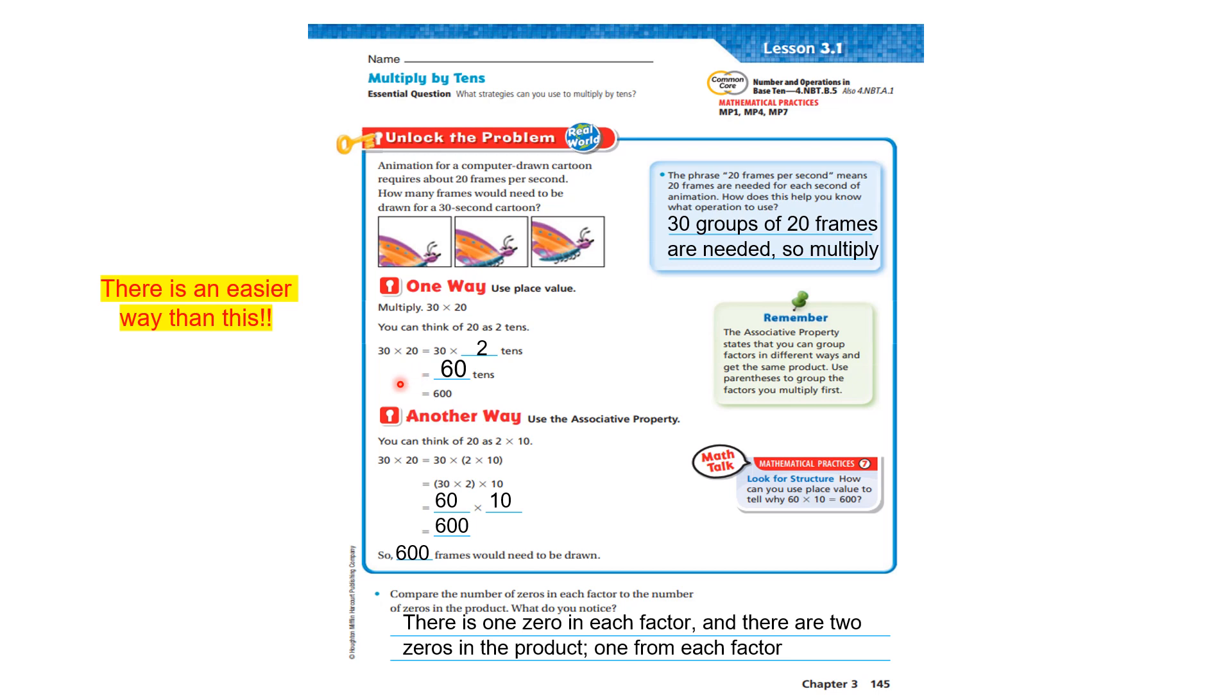Another way is to use the associative property. You can think of 20 as two times 10. So 30 times 20 equals 30 times two times 10. That equals 30 times two times 10, which equals 60 times 10. 60 times 10 is 600. So 600 frames would need to be drawn. Compare the number of zeros in the factor to the number in the product. There's one zero in each factor, and there are two zeros in the product. We're going to get to that in a second because that's kind of the easier way to do this.